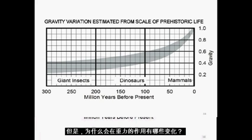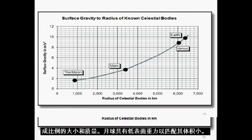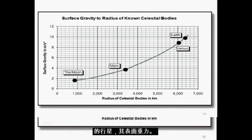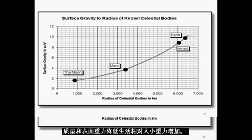But why would the force of gravity have changed? There is one obvious fact about celestial bodies like the Earth: surface gravity is proportional to size and mass. The Moon has a low surface gravity to match its small size. Among the planets, Mars is smaller than the Earth and has a lower gravity; Venus approaches both the Earth's diameter and gravity. There is a definite relationship between the size of a planet and its surface gravity. Based on the relative scale of ancient life, when the dinosaurs roamed the Earth, it was about one-half the diameter it is now. Since that time, the Earth has increased in its diameter, mass, and surface gravity, reducing the relative size of life as gravity increased.